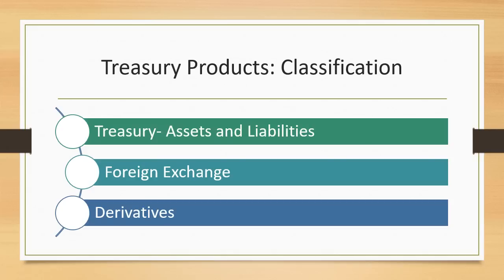When we classify Treasury products, we put them under four broad heads: Treasury assets, Treasury liabilities, foreign exchange, and derivatives. If you are working in Treasury, which is a very important department of a bank, you need to know about these various Treasury products because your activities may relate to them. So let us look at Treasury assets and liabilities, then foreign exchange and derivatives.